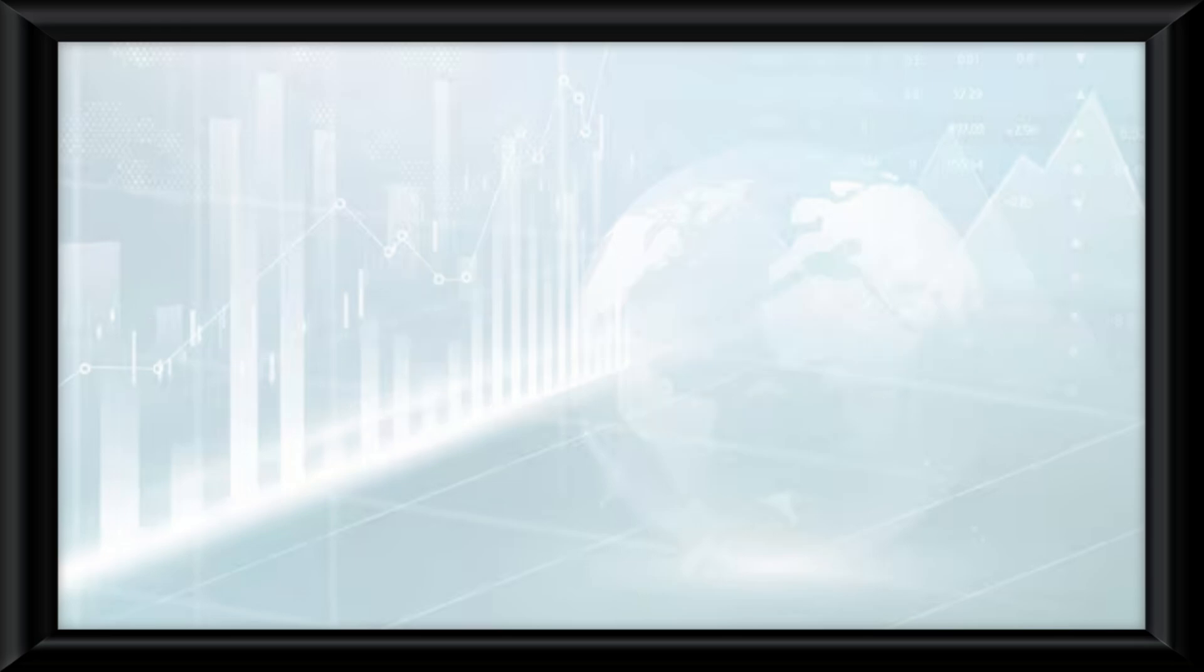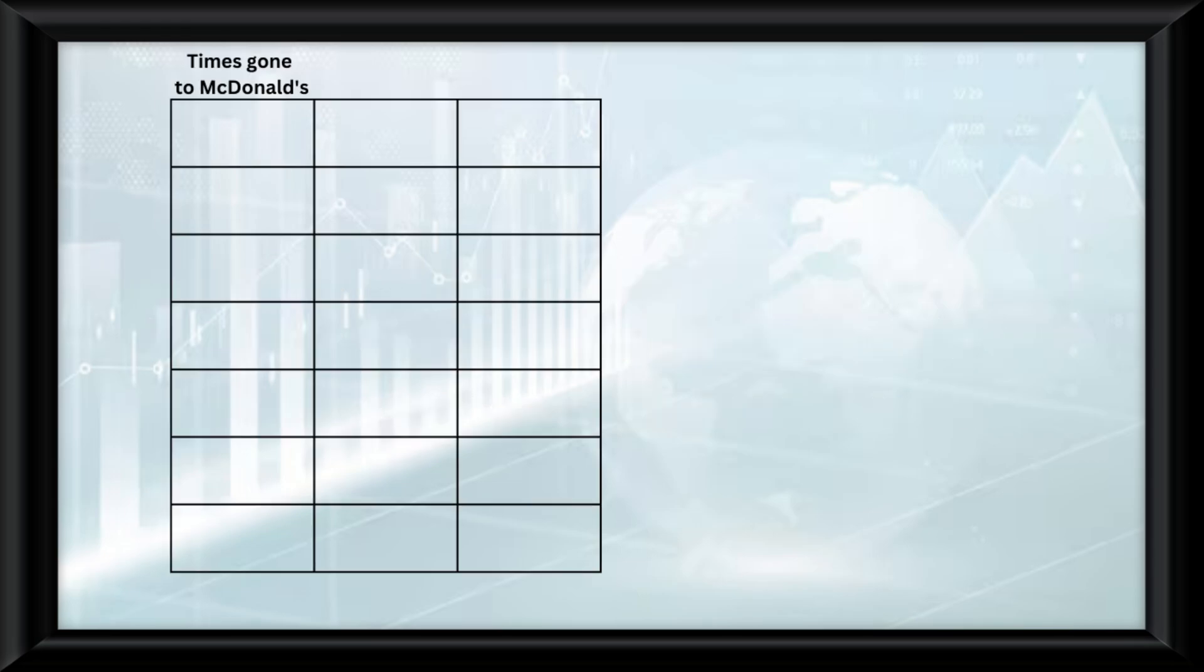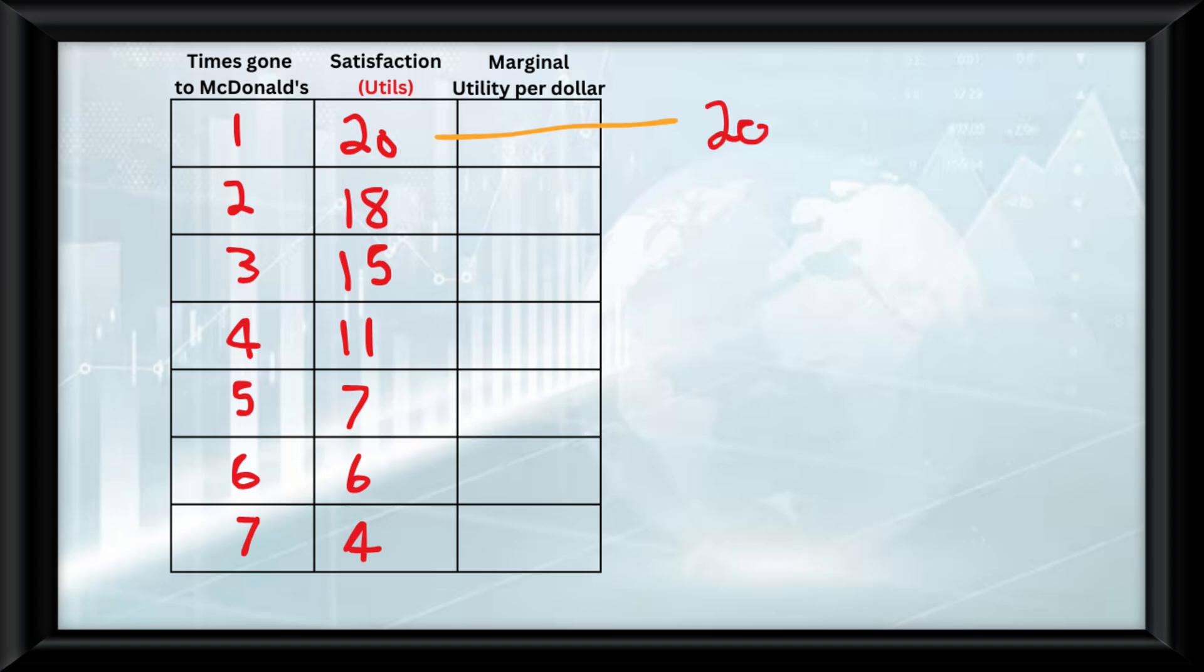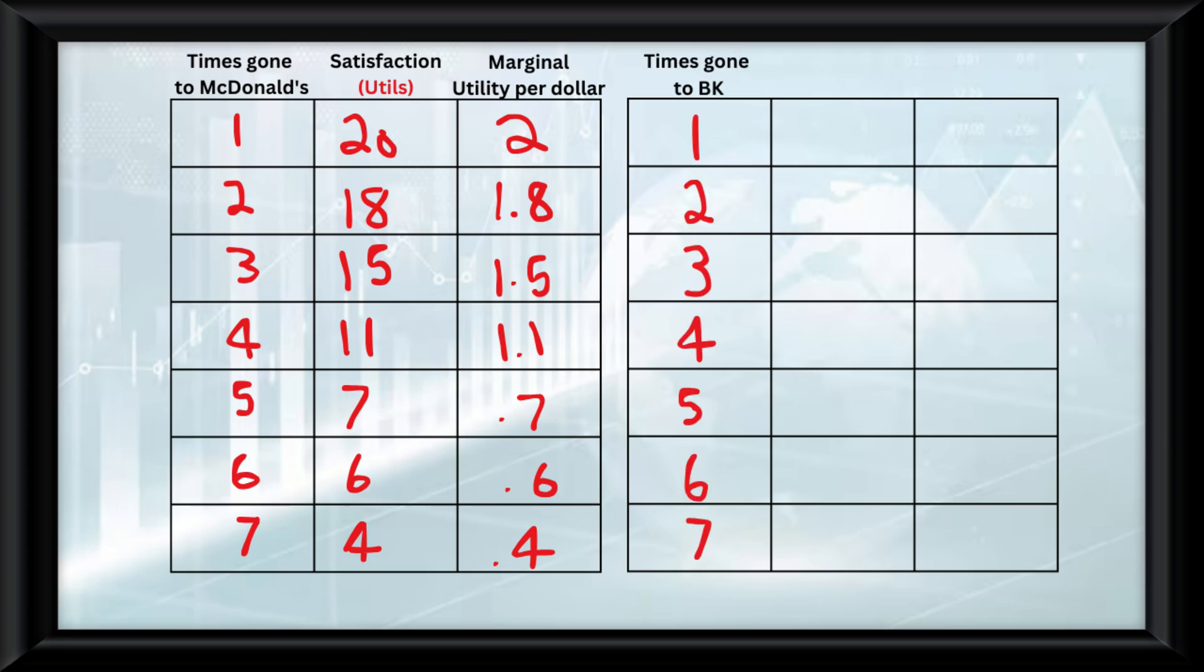The best way I think I can describe this is by using a table. Say we go to McDonald's every day for a week and spend ten dollars each time. For each day, the satisfaction level, measured in utils, will go down. Now you calculate the marginal utility, or satisfaction, per dollar by doing the marginal utility divided by the price for each one. And then say we have another scenario where we go to Burger King every day for a week and spend ten dollars, and we quantify everything here.